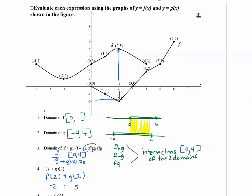And we want to add these results together now. So negative 2 plus 5 is 3. So f plus g of 2 is equal to 3.